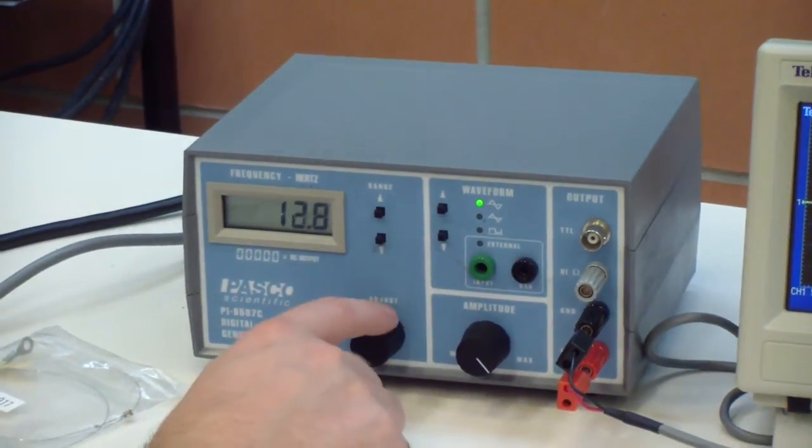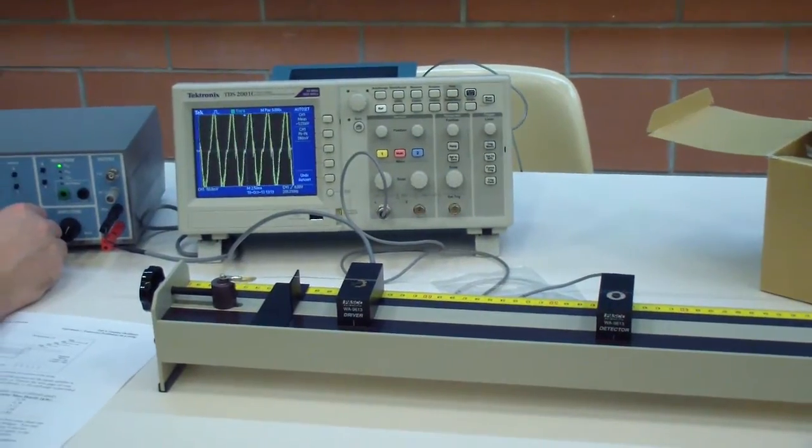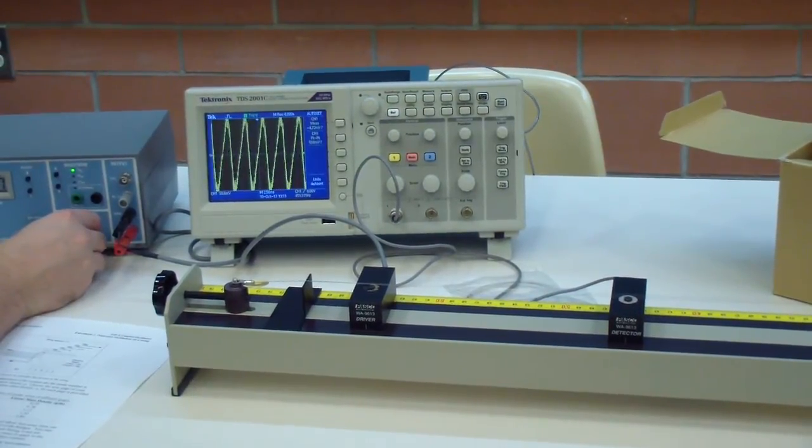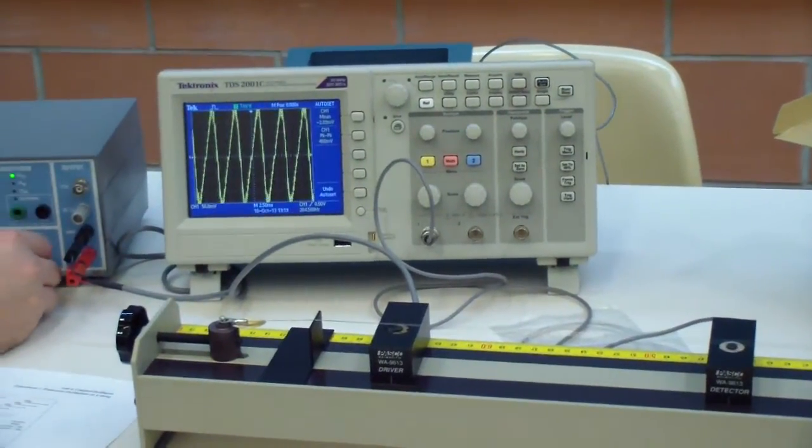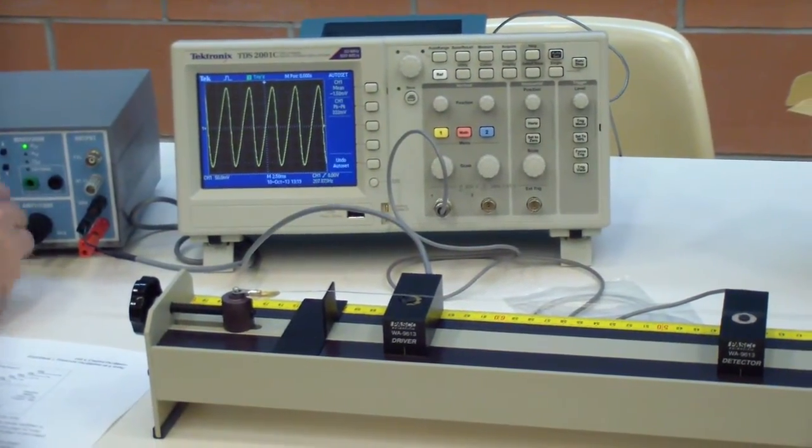Increase the output frequency of the function generator until you hit one of the resonant modes. Each of these modes will occur when the amplitude of the signal displayed on the oscilloscope hits a local maximum. Although the manual says to begin with the fundamental frequency, it may be easier to start with n equals 2 where you can see a node.